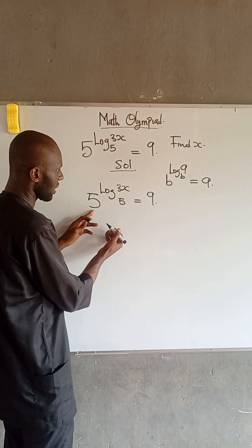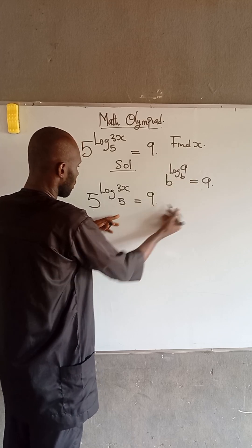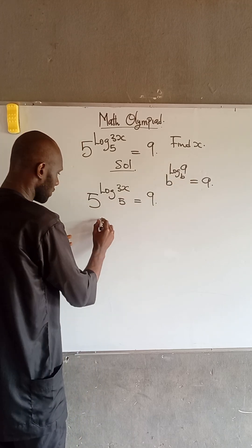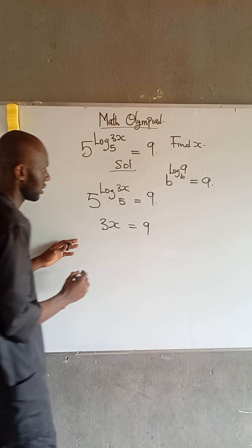So also watch, I have 5 here and I have 5 here. Watch here I have b here and I have b here. So therefore this expression here at the left-hand side becomes 3x equal to 9.